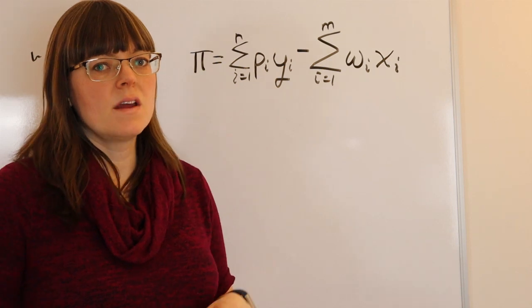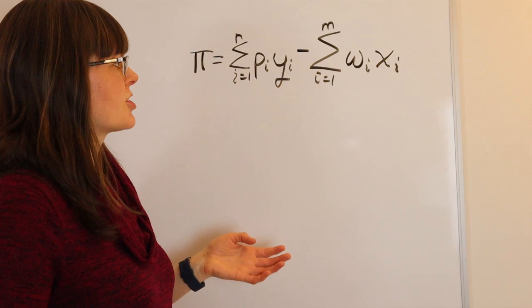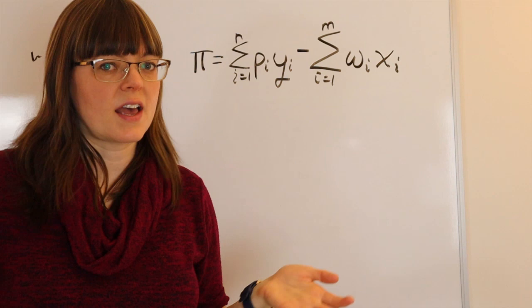Here we're looking at this equation which is in the Varian book in the profit maximization chapter. This video is to help you think about how to read these summation signs if you see them in microeconomic models.